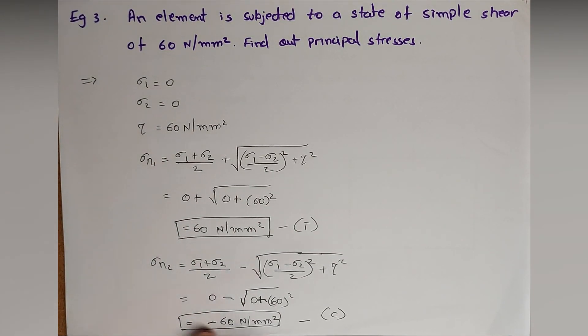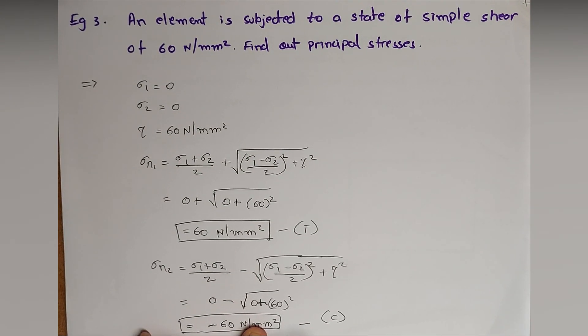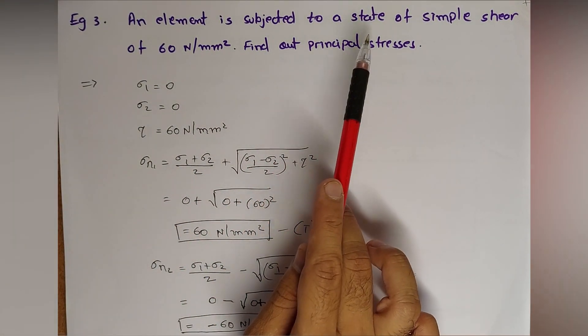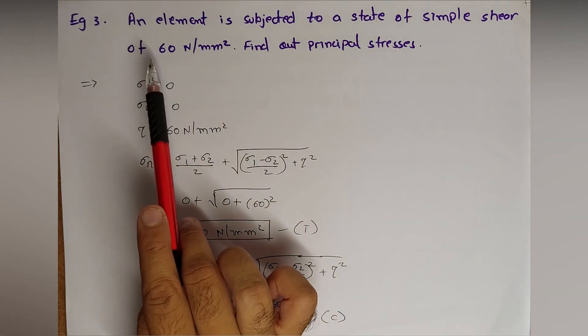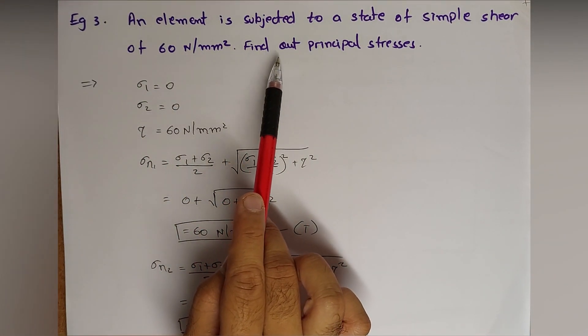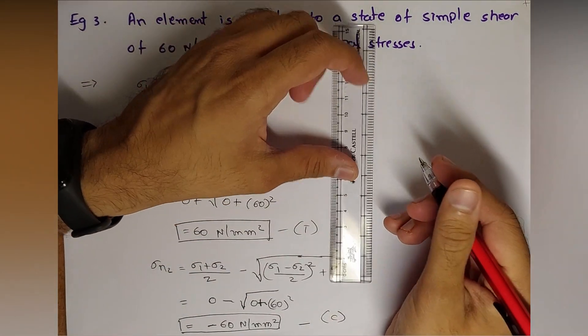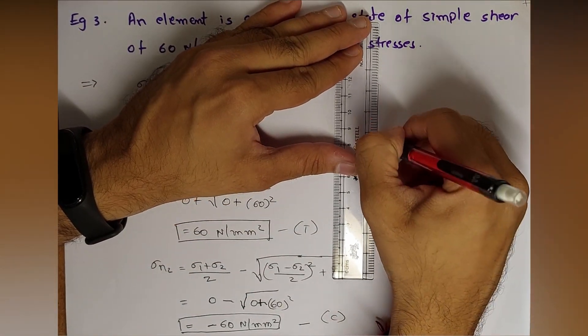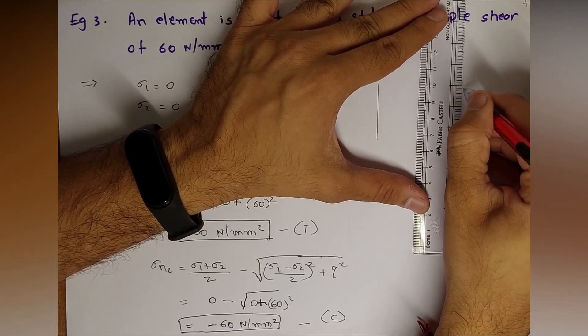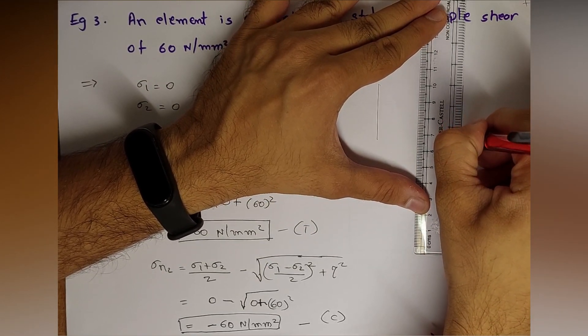We'll quickly move towards the question. This is a very short question. An element is subjected to a state of simple shear of 60 Newton per mm square, find out principal stresses. So quickly I'll just draw the figure. Suppose this is the element required as mentioned in the question.